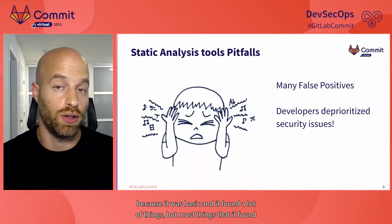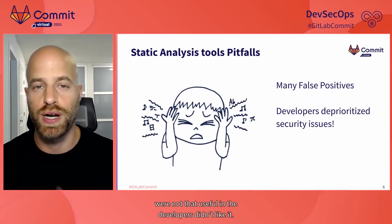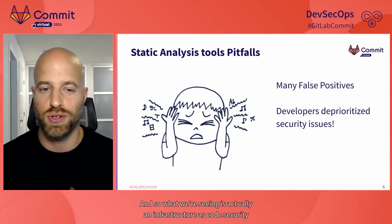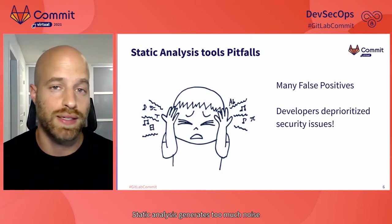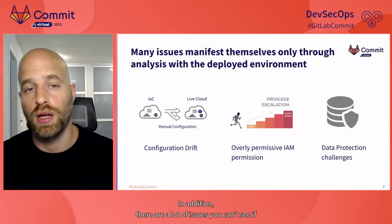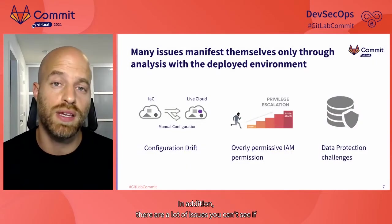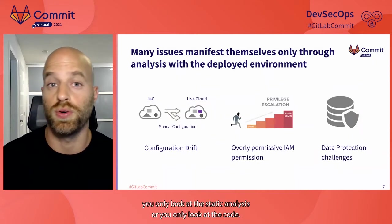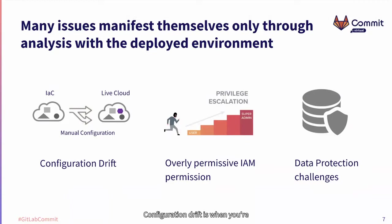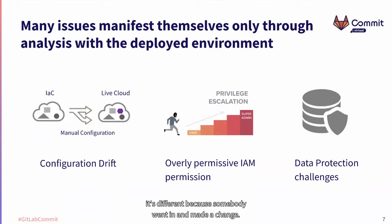SAST was basic — it found a lot of things but most of what it found was not that useful, and developers didn't like it. We're seeing the same thing happen in infrastructure as code security: static analysis generates too much noise and is very frustrating for developers. In addition, there are a lot of issues you can't see if you only look at the static code. For example, you can't find configuration drift by looking at the code alone — you need to look at the live environment as well. Configuration drift is when you define a resource in code but then the actual live environment differs because somebody made a manual change.